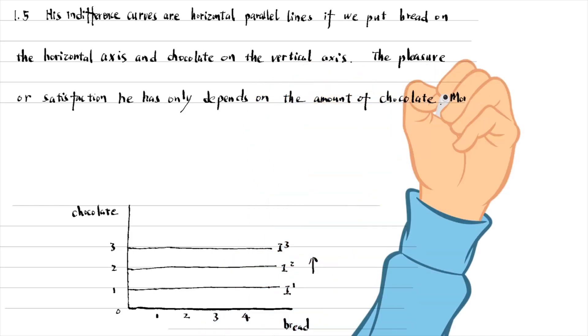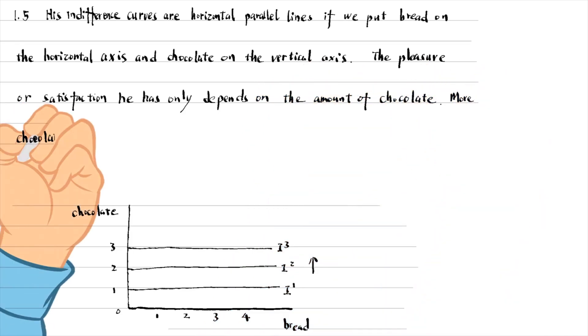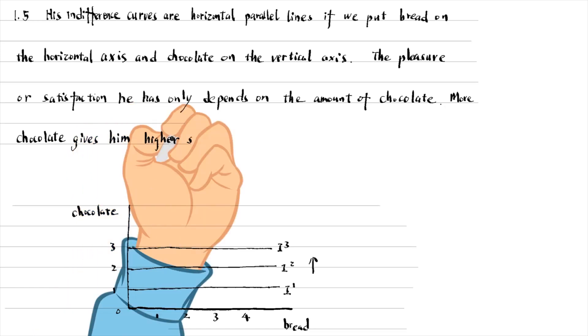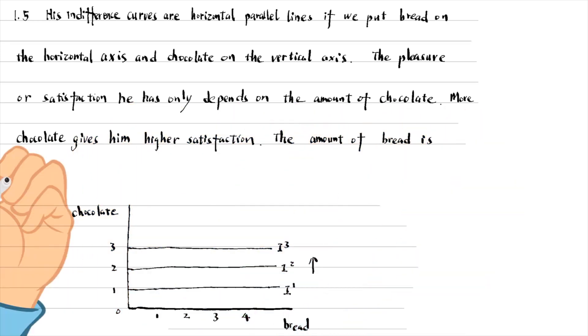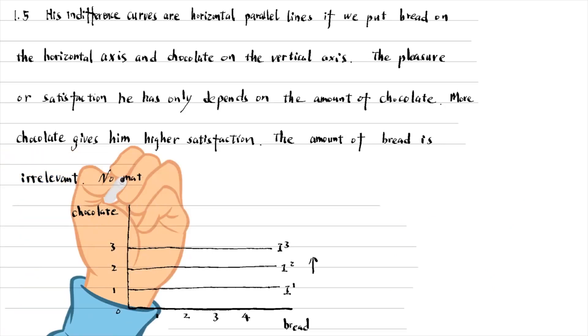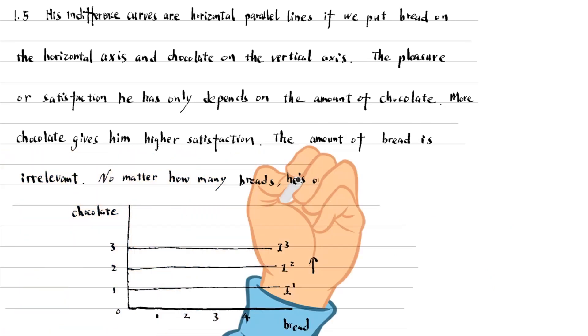More chocolate gives him higher satisfaction. The amount of bread is irrelevant. No matter how many breads, he is on the same indifference curve.